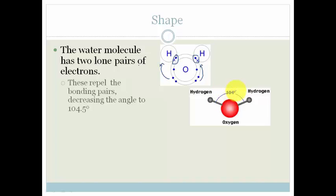Now I'm sorry that the drawing says 104, it's 104.5 degrees. And guys, you need to learn that angle. That is one of the few angles you do need to learn. And if they ask why is this? Because the lone pairs are repelling the shared pairs of electrons.